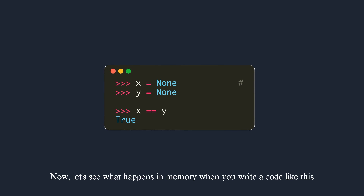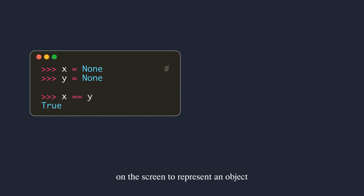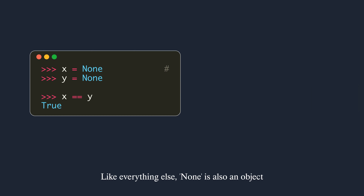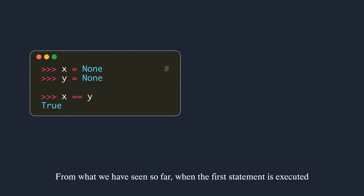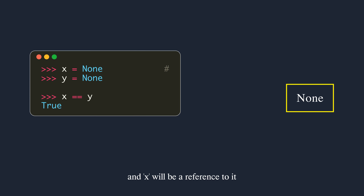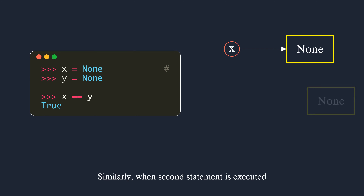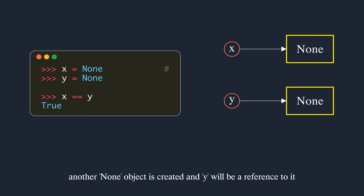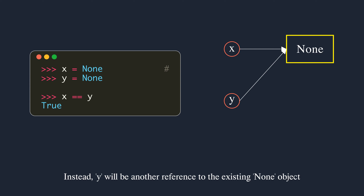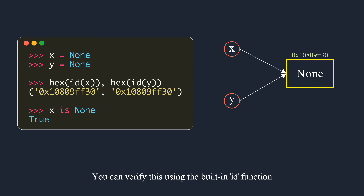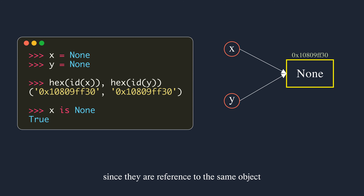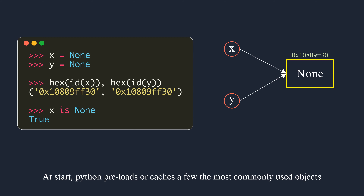Now let's see what happens in memory with None. None is used to represent empty values or null pointers in Python — like everything else, None is also an object. When the first statement x = None is executed, you might expect a None object to be created in memory. Similarly when y = None is executed, you might expect another None object. However, a new None object is not created — y will be another reference to the existing None object. You can verify this using the built-in id() function, which returns the memory address of the object. Both x and y have the same address since they reference the same object.